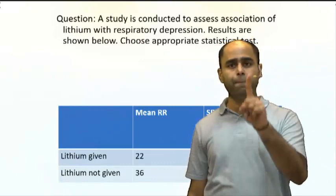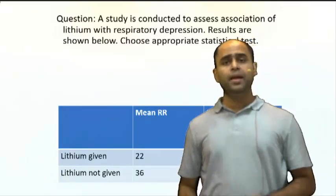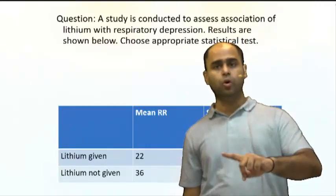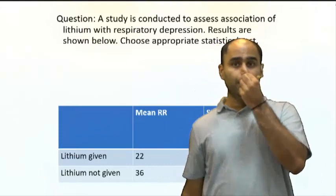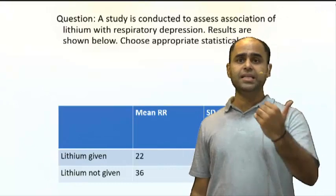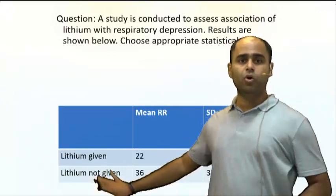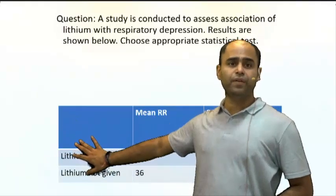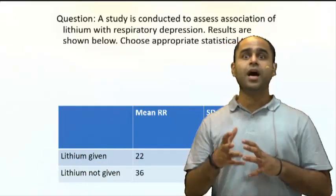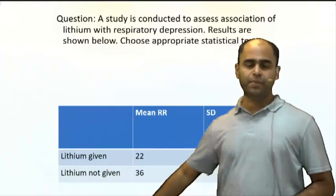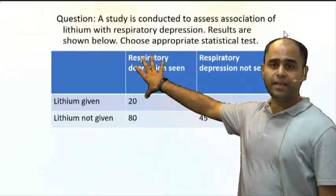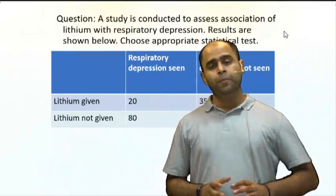How to approach questions on statistical tests — four steps are important. First, the number of groups: in this question, there are two groups — lithium taken yes or no. Second, paired or unpaired: when done on the same person, before and after exercise, it is paired. Here we have two different groups — one patient given lithium, another not — so it is unpaired.